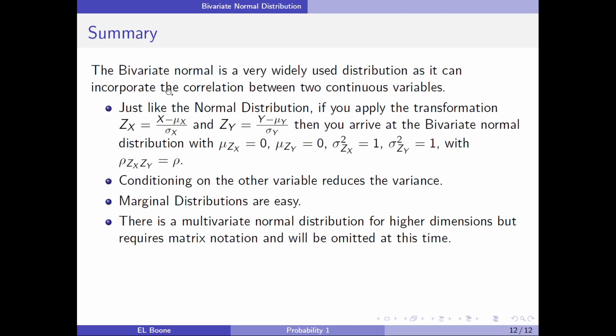Quick rundown of what we've talked about. We have the bivariate normal, great for two continuous variables. There is a standard normal version of this thing. You can apply these transformations just like you did before, and you'll end up with a distribution with means of zero and variances of one and ρ still stays with ρ. Conditioning on the other variable really can help you reduce variance. If you have more information, that's good to put in there.